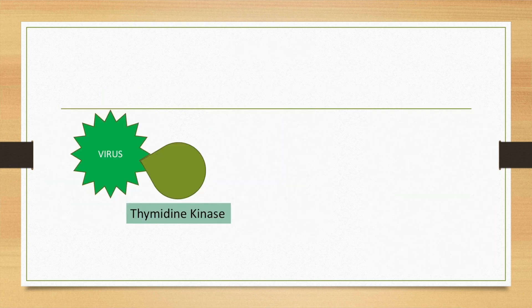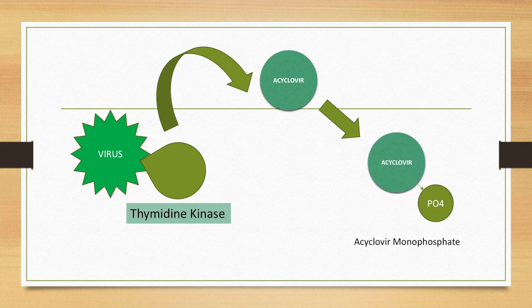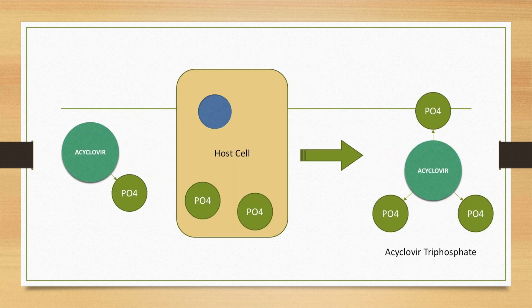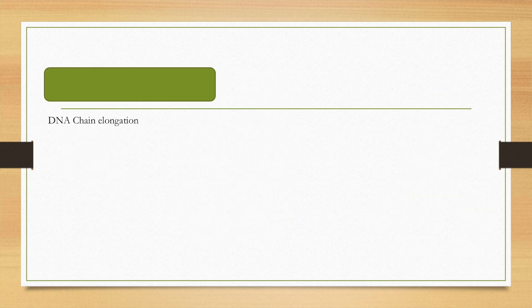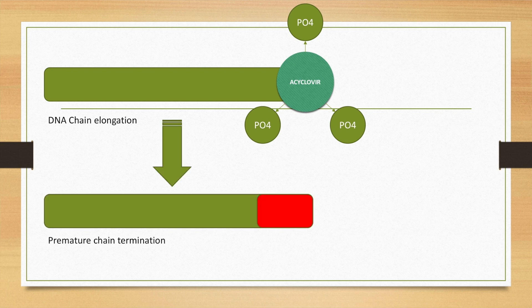The mechanism of action of acyclovir involves a virus along with thymidine kinase. Acyclovir converts to acyclovir monophosphate and then inside the host cell converts to acyclovir triphosphate, which terminates elongation of the DNA chain, resulting in impaired viral replication and death.